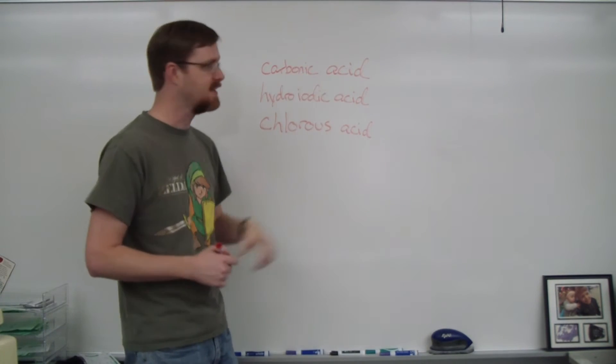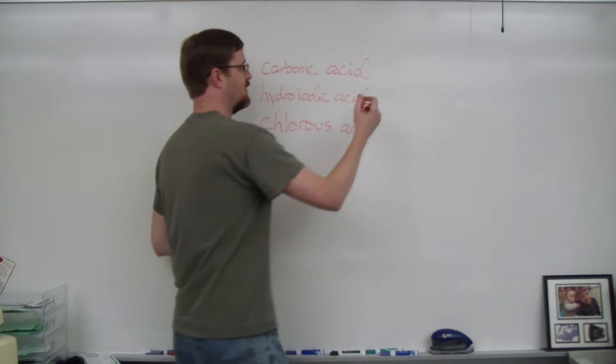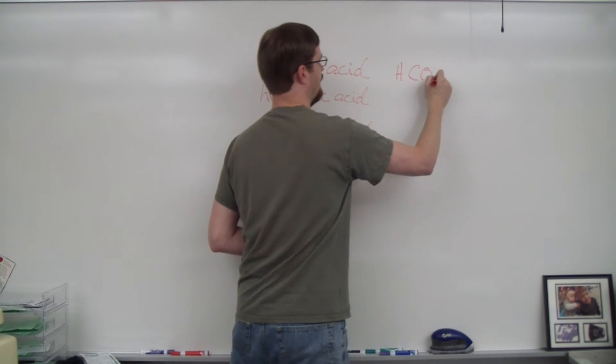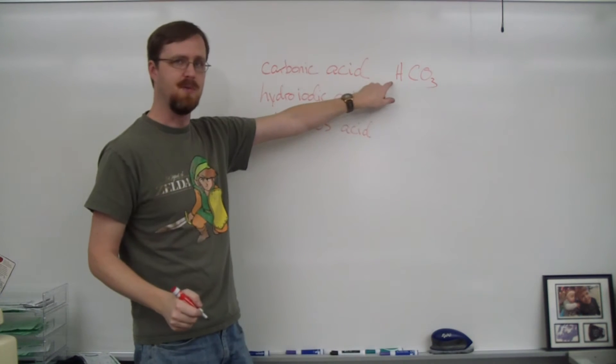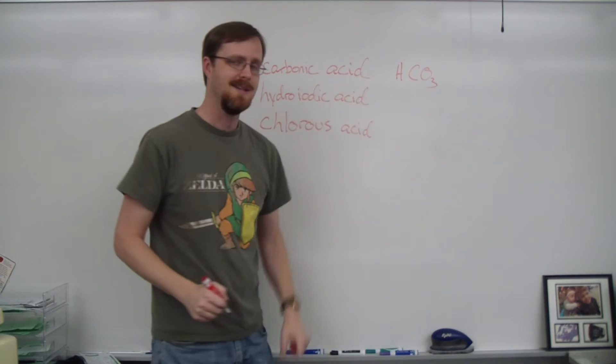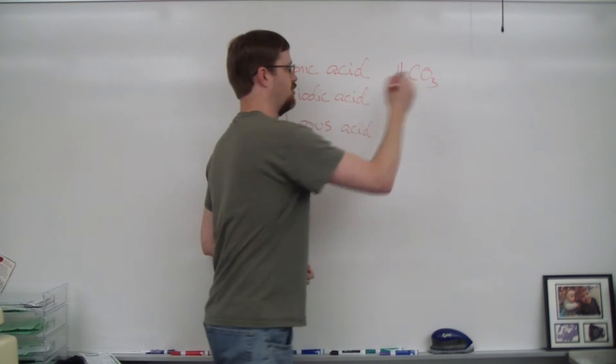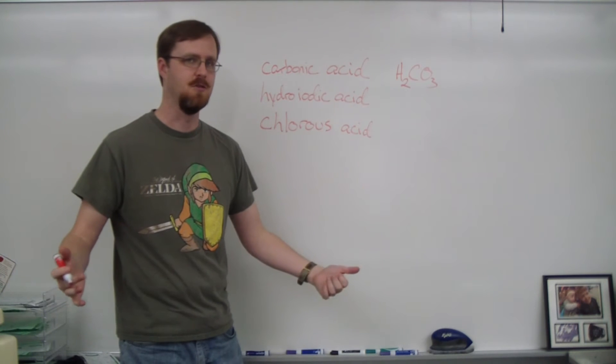So this is carbonate. And because it's an acid, it's going to start with hydrogen. Carbonate is CO3. Hydrogen is plus one. Carbonate is negative two. So in order to balance that out, we need two hydrogens. So H2CO3.